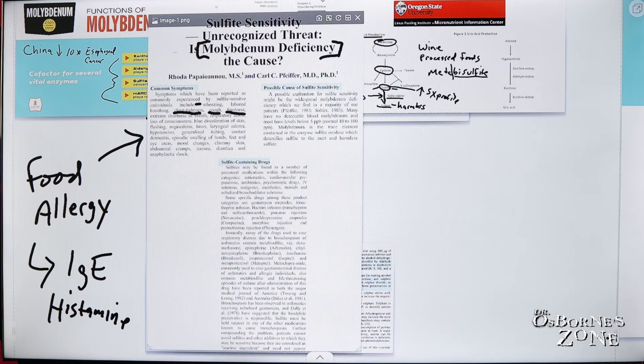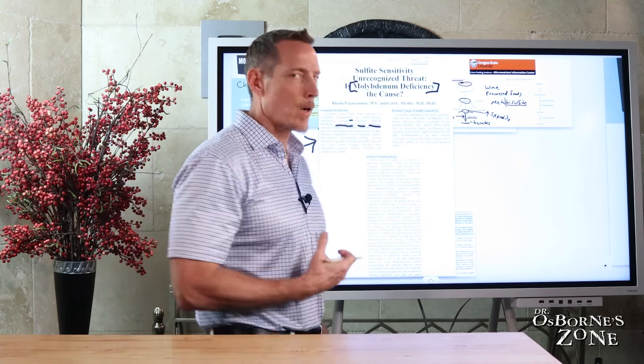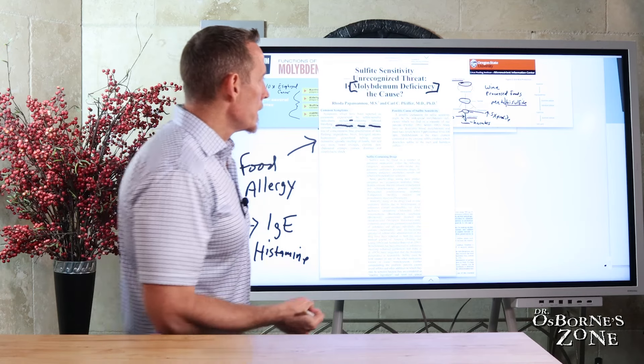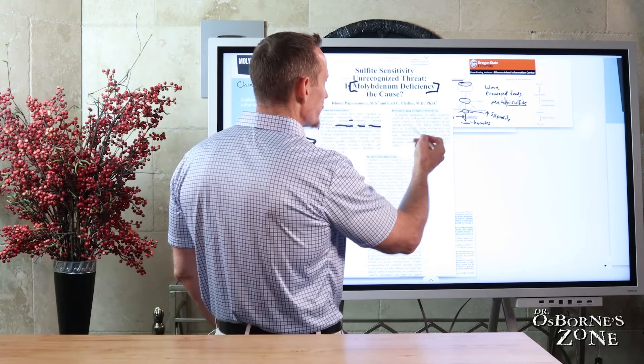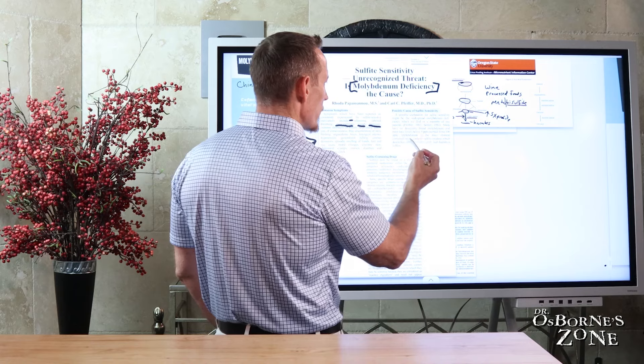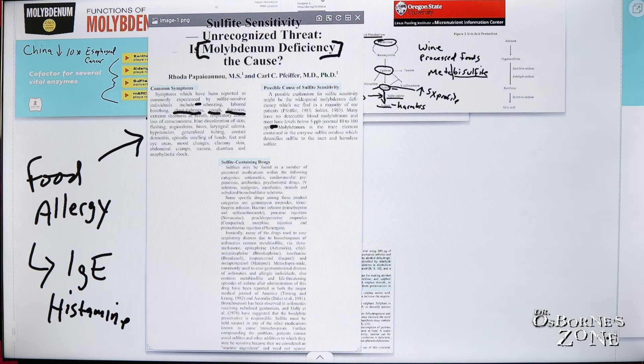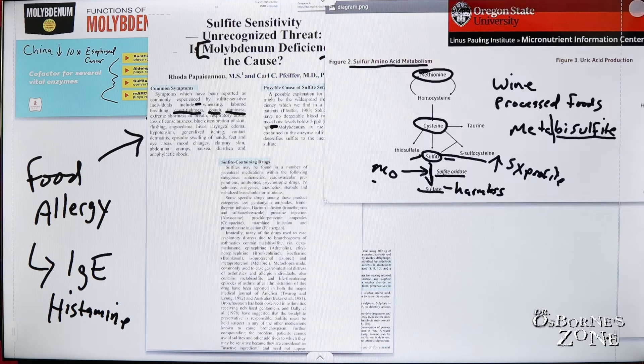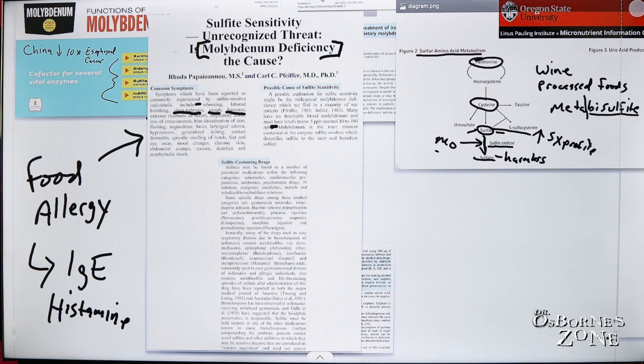So something to consider, especially if you are exposed to or exposing yourself to foods or items that have high sulfite content. Now, there's other possible causes of sulfite sensitivity. You can see here, they go on to discuss the problem is that with a lack of molybdenum, you can't metabolize sulfite to sulfate. Going back to this diagram, sulfite to sulfate. So that's the possible cause.